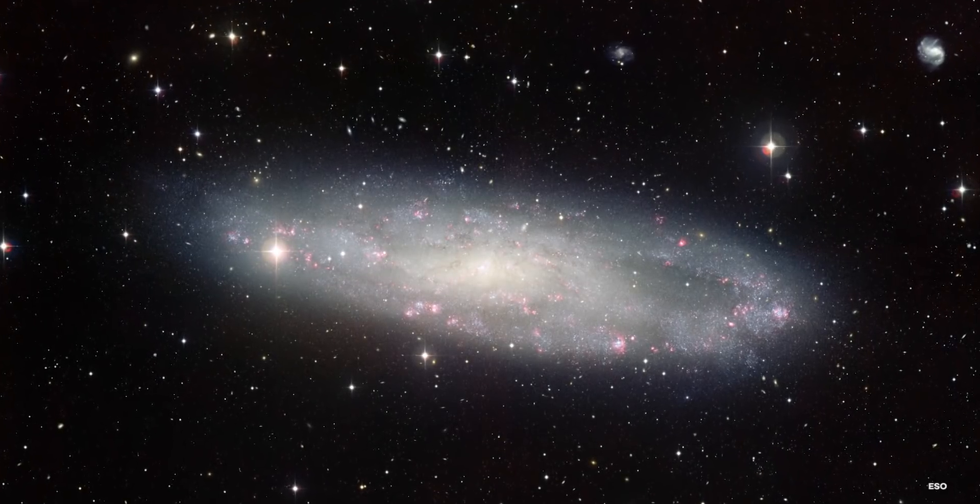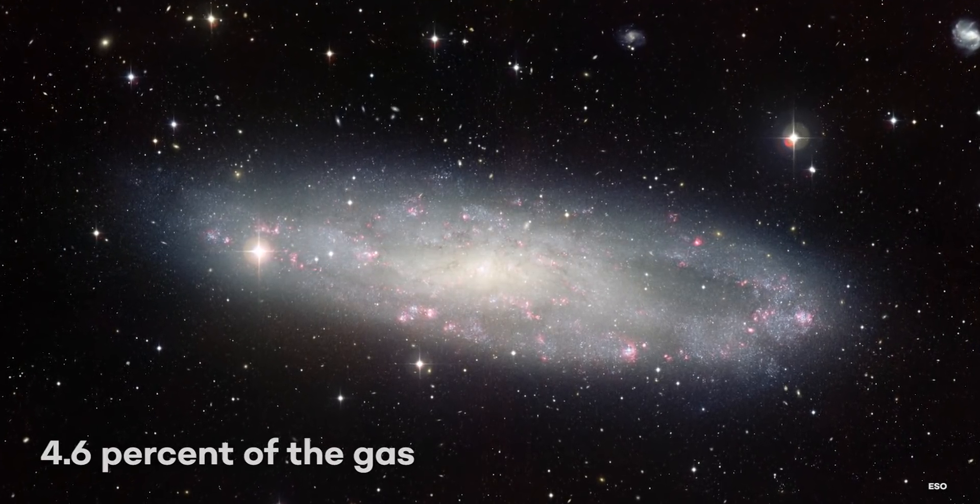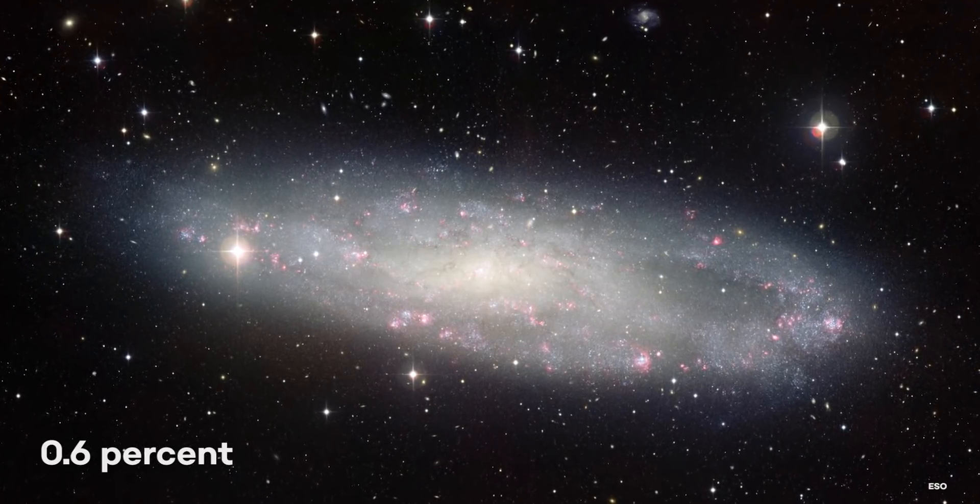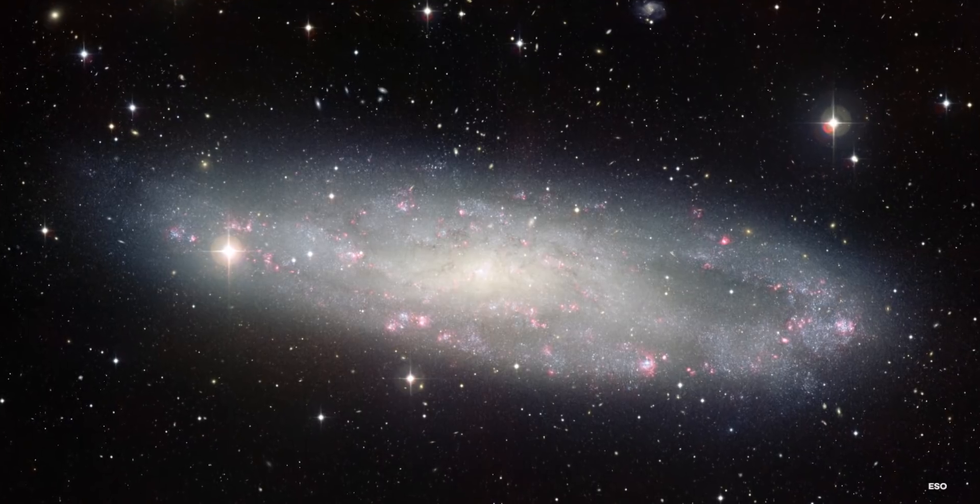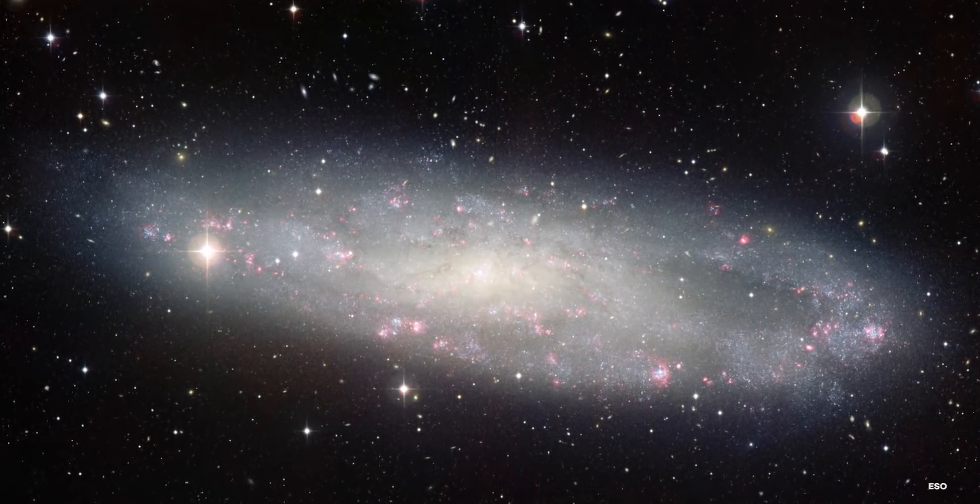One of these galaxies has around 4.6 percent of the gas of a normal galaxy at that distance, another has 0.6 percent, and the remaining four have undetectably small amounts. The gas and dust within these galaxies and their surroundings have been nearly entirely removed.